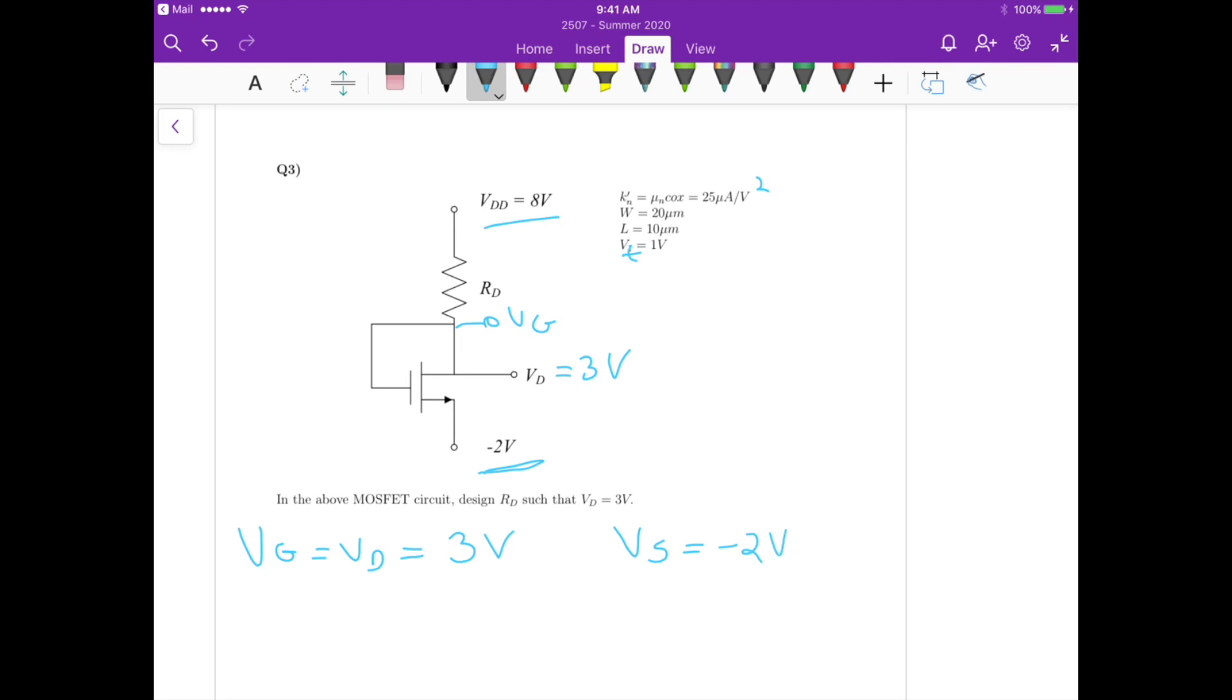So from these two cases here we can calculate VGS, that's equals to VG which is 3 volts minus VS, so this gives us 5 volts, it's 3 minus minus 2 which gives us 5 volts.